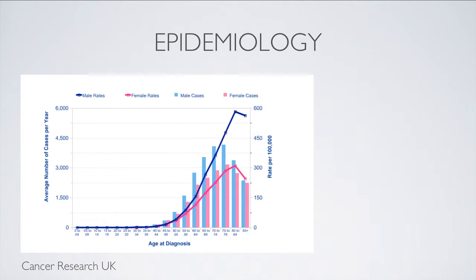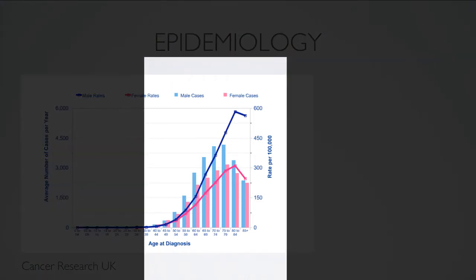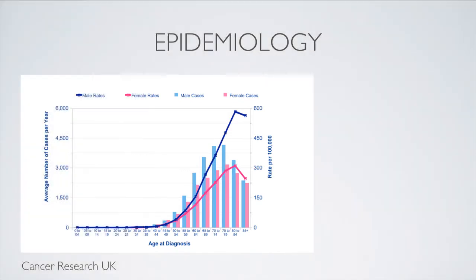Lung cancer is the second most common cancer among men and the third among women. It is roughly twice as common in men. The median age of diagnosis is 65 to 70 years of age.